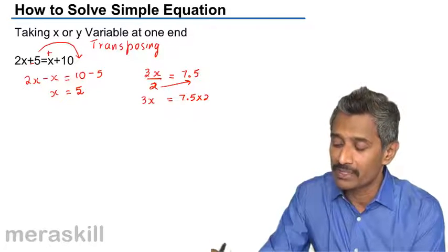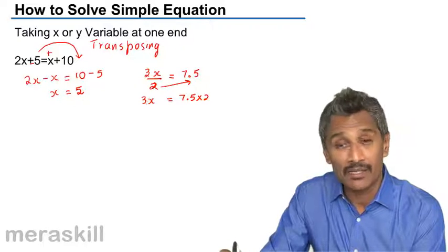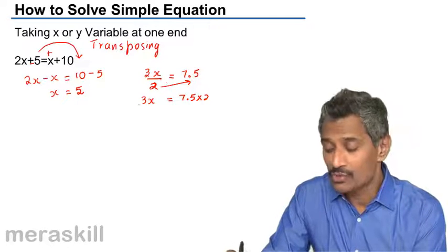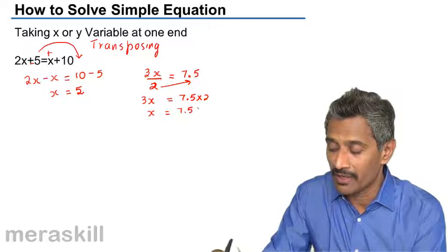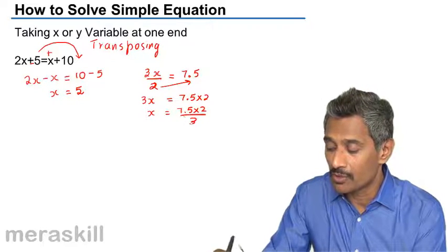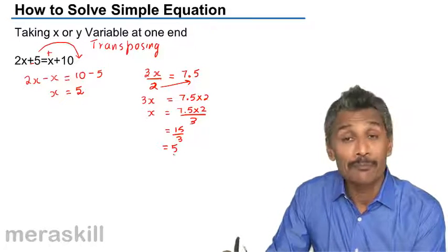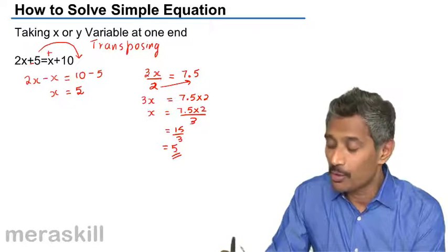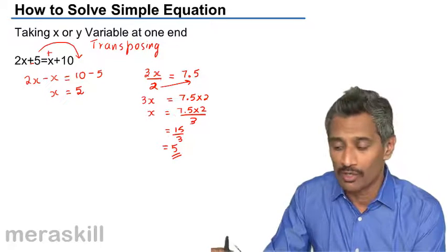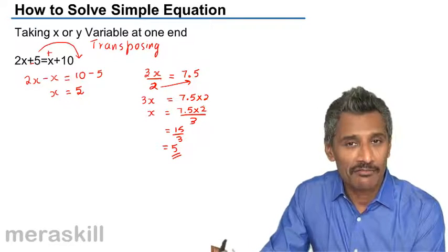To separate this 3, which is being multiplied, we divide both sides by 3. So you get 7.5 × 2 ÷ 3, which is 15 ÷ 3, which is 5. So we say that the solution to this equation is 5, or we also say that the root of this particular equation is 5.